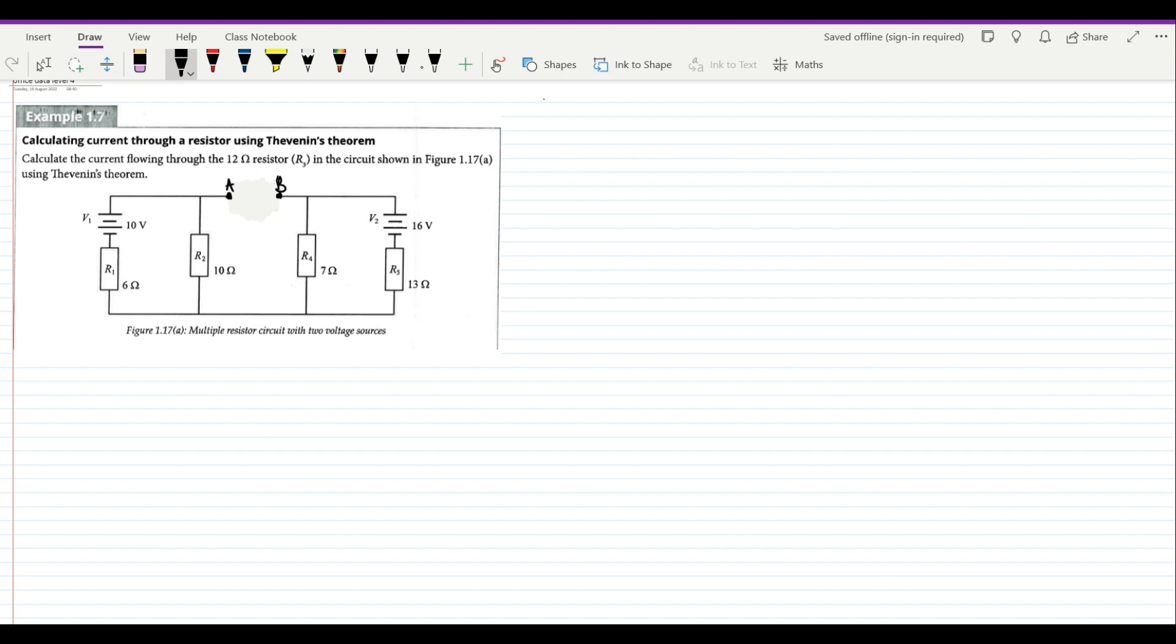After doing that you must be in a position to identify the flow of currents. In this particular instance, if V1 was supplying, the current would flow through the load from point A and leave the load at point B. When V2 is supplying, the current will enter the load at point B and leave at point A. Pack that information for now because we're going to use it at a later stage.